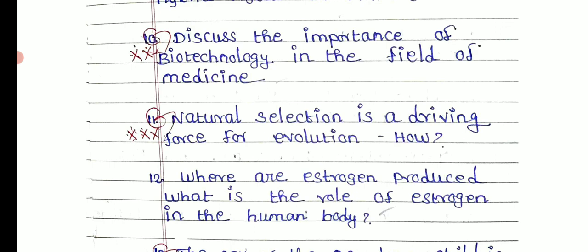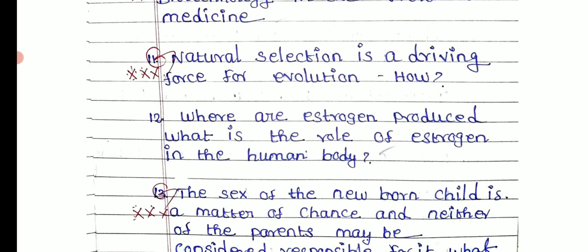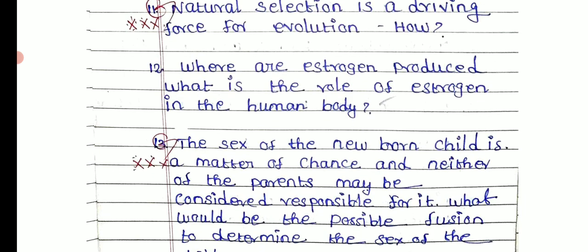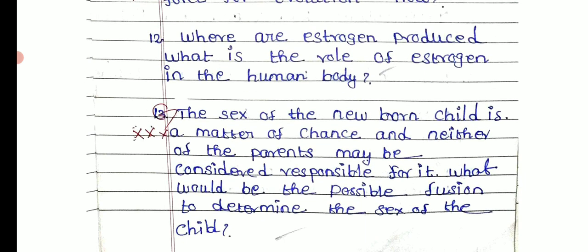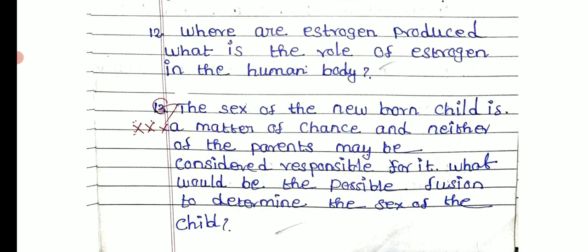Natural selection is a driving force of evolution — how? How are estrogens produced, and what are the roles of estrogens in the human body? The sex of a newborn child is determined by the father, not the mother — what are the possible combinations that determine the sex of the child? How?